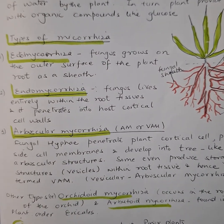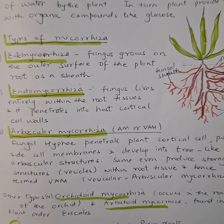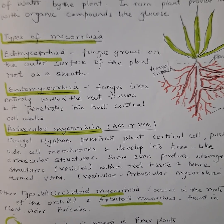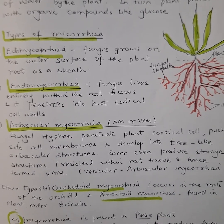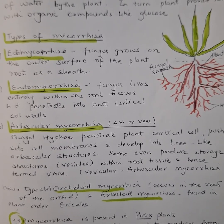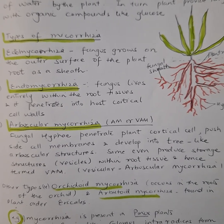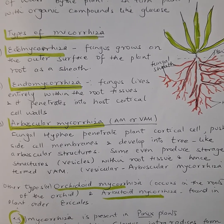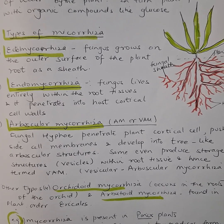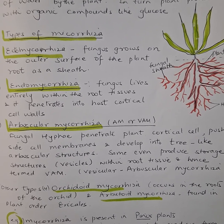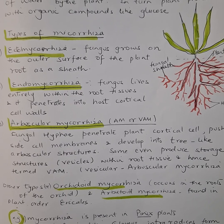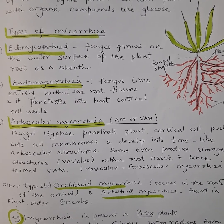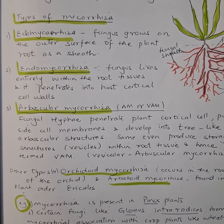Then there is arbuscular mycorrhiza. Here, fungal hyphae penetrate the plant cortical cells, push aside their cell membranes, and finally develop into tree-like arbuscular structures. Some even produce storage structures called vesicles within the root tissues, which is how they get their name.